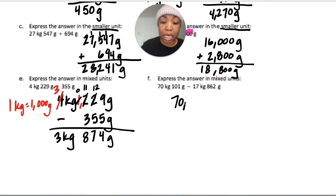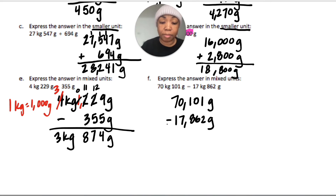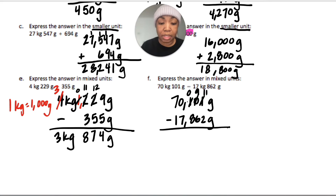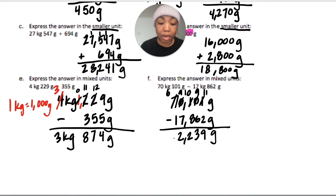For the second mixed-units problem I'll convert to smaller units first: 70 kilograms 101 grams is 70,101 grams minus 17 kilograms 862 grams is 17,862 grams. Can't do one minus two, can't take from zero, so I take from the one — seven becomes ten, then nine, then eleven. Can't do nine minus six... can't do zero minus eight, so I take from seven — seven becomes six, zero becomes ten, nine, then ten. Subtracting: eleven minus two is nine, nine minus six is three, ten minus eight is two, nine minus seven is two, six minus one is five — giving 52,239 grams, which in mixed units is 52 kilograms 239 grams.